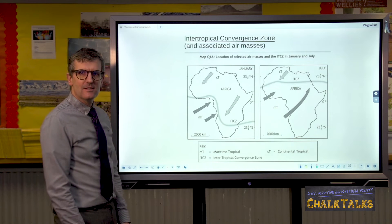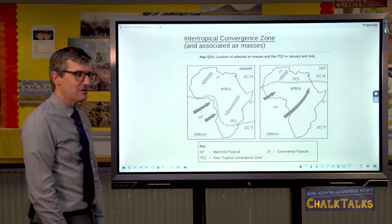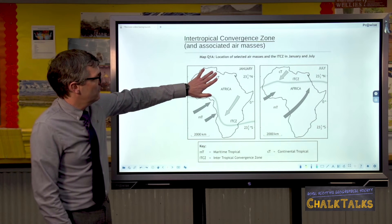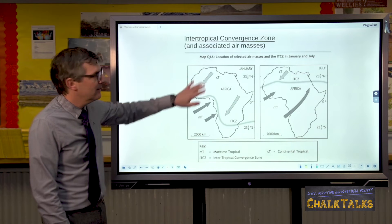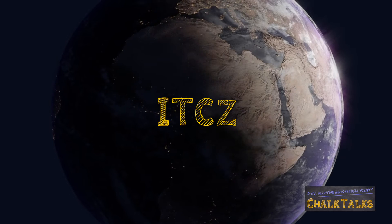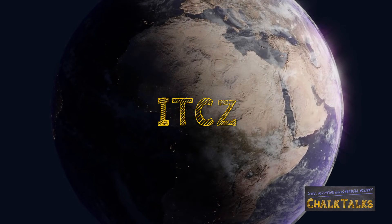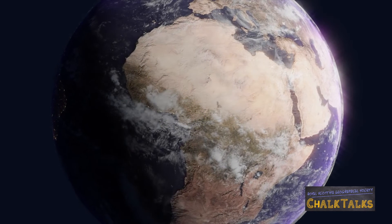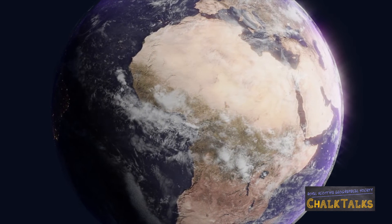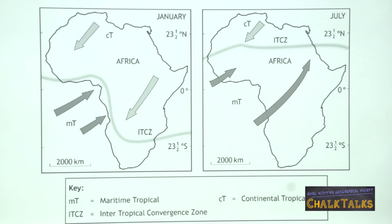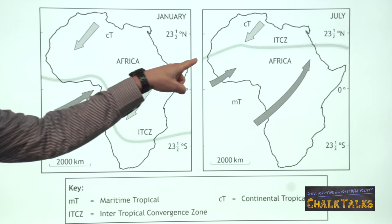The final thing you could be asked about is the Intertropical Convergence Zone, the ITCZ, and the effect that it has on the rainfall patterns of West Africa. The ITCZ itself is a zone at the thermal equator where the trade winds meet. The thermal equator receives the most intense heat from the sun and it shifts as the Earth tilts on its axis in relation to the sun. Therefore in January it's further south and it moves north in July.